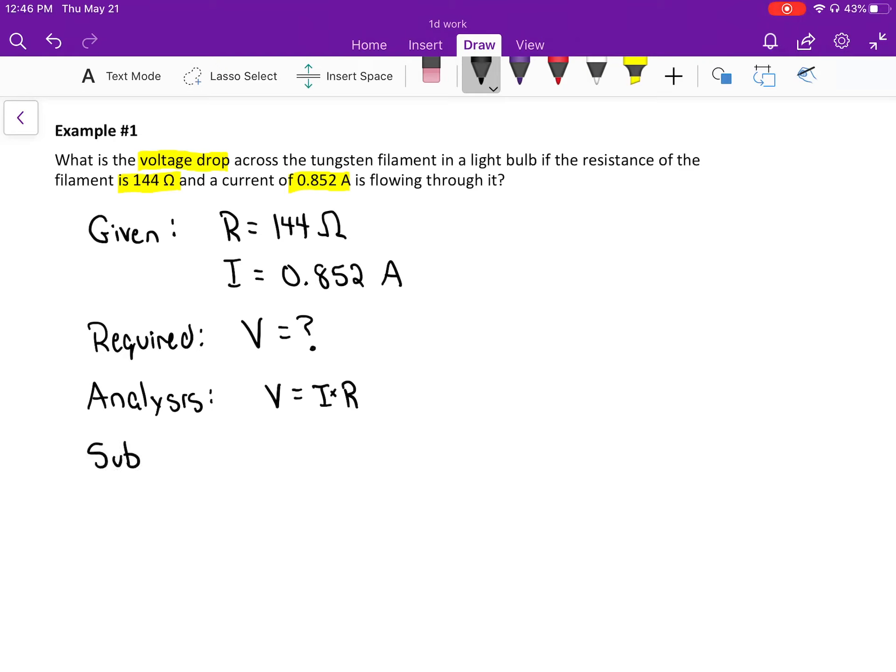The S step stands for substitution, or solving sometimes. Now, we actually solve it. V is equal to I times R. We know the I number is 0.852. We know the R number is 144. I'm okay if you don't put units in that step, as long as you take the time to put the units in your given. Now, you get out your calculator. Crunch it out. Your calculator is going to spit out the number 122.688, and that's a number that's in volts.